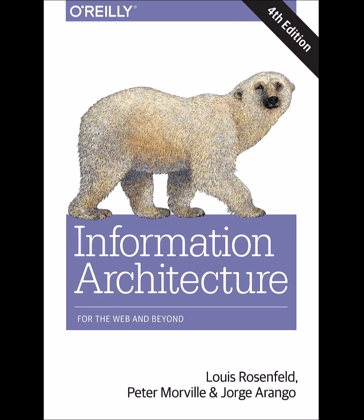Recap of Chapter 6. Our understanding of the world is informed by how we classify things. Classifying things is not easy — we have to deal with ambiguity, heterogeneity, differences in perspective, and internal politics, among other challenges. We can organize things using exact organization schemes or ambiguous organization schemes. Exact schemes include alphabetical, chronological, and geographical groupings. Ambiguous schemes include topical, task-based, audience-based, metaphorical, and hybrid groupings. Social classification has emerged as an important tool for organizing information in shared digital environments.